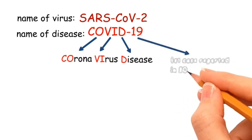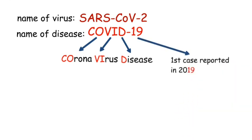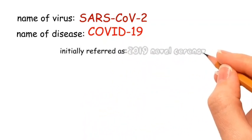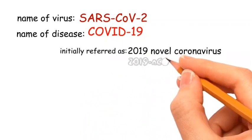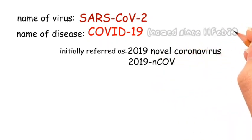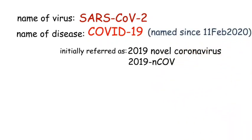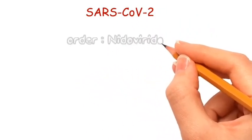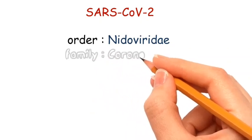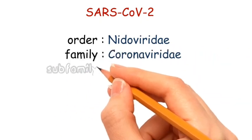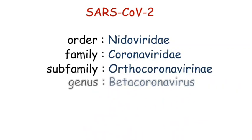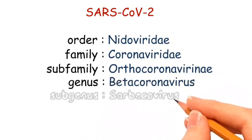As the first case was reported in 2019, initially the disease was referred to as the 2019 novel coronavirus. SARS-CoV-2 comes under the order Nidovirales, family Coronaviridae, sub-family Orthocoronaviridae, genus Betacoronavirus, and subgenus Sarbecovirus.